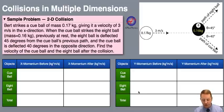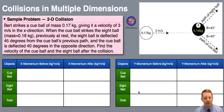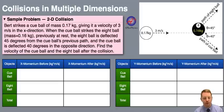The first thing I'm going to do in a problem like this is set up my momentum table, beginning with the x direction. Since I don't know the velocity of the balls after the collision, I'll call the velocity of the cue ball after the collision v sub c, and the 8 ball after the collision v sub 8. I'll need to use a little bit of trig after the collision to figure out the x components of these balls. Let's start by filling in what we can.